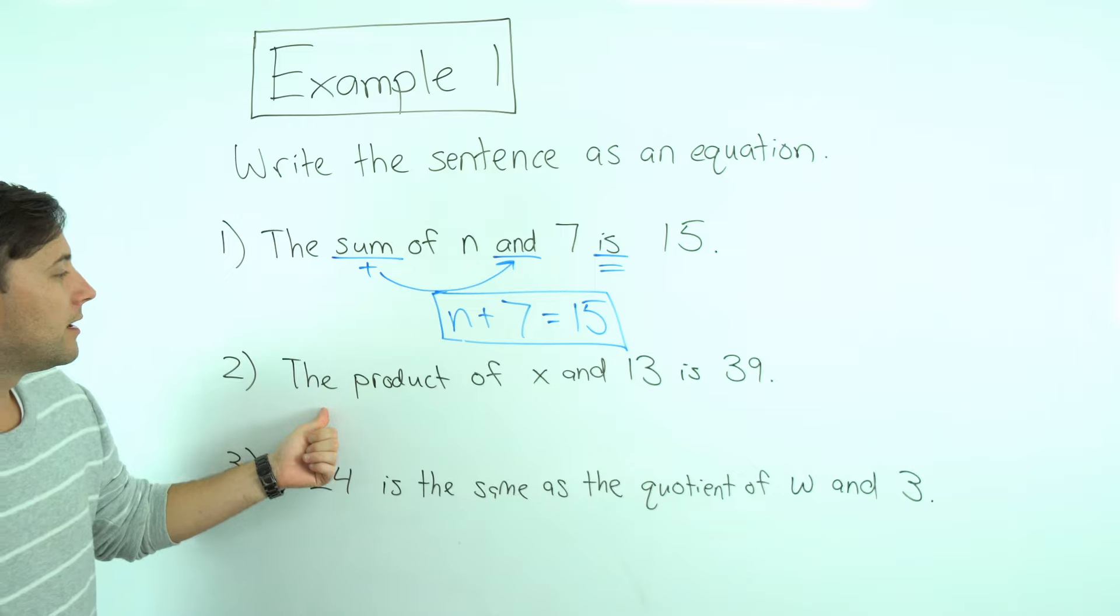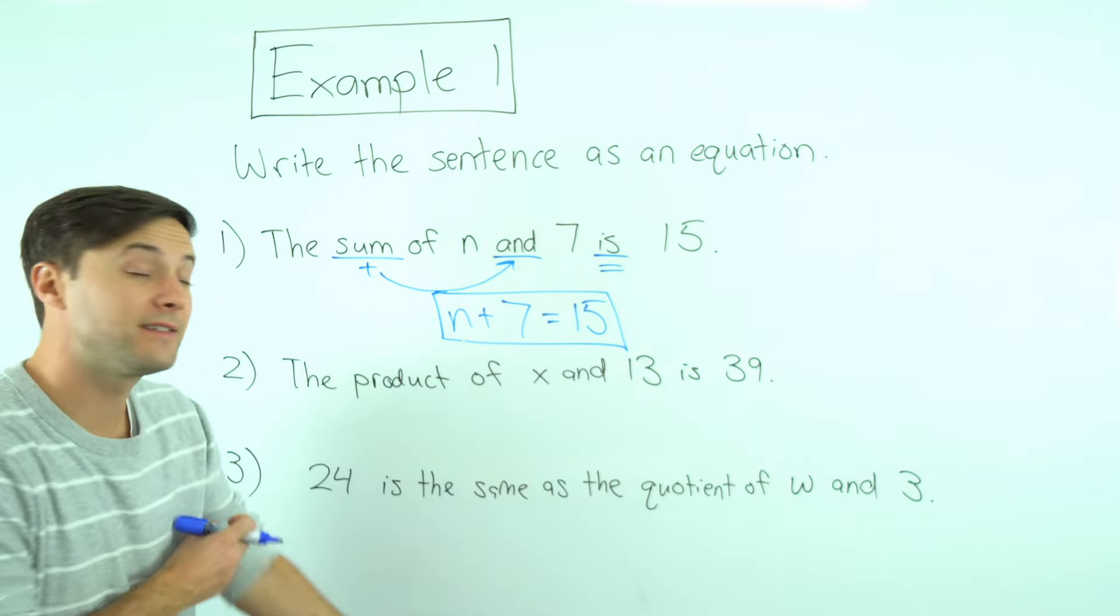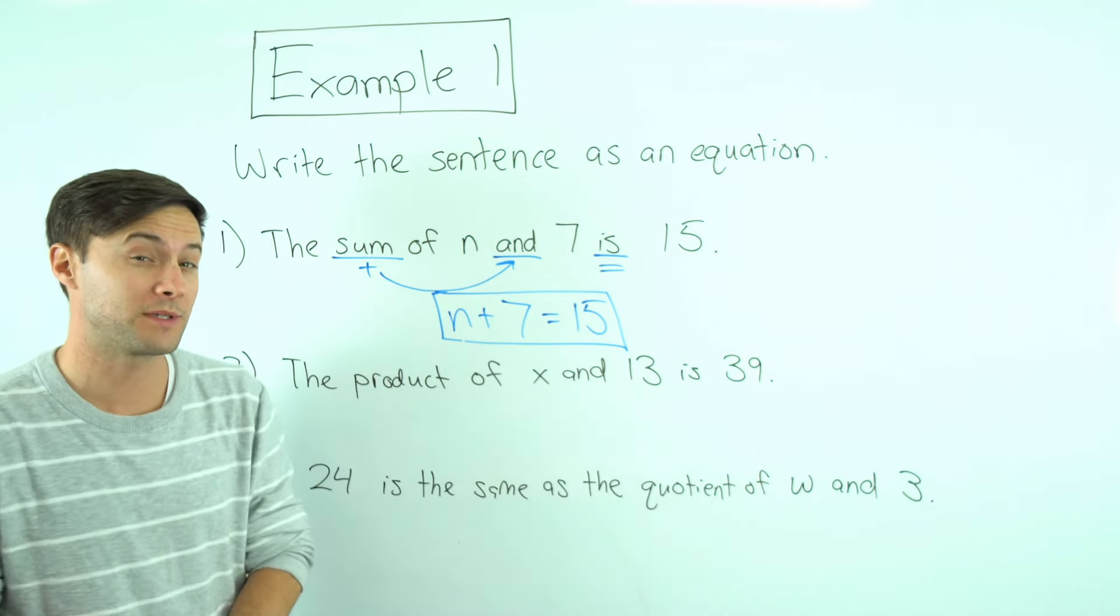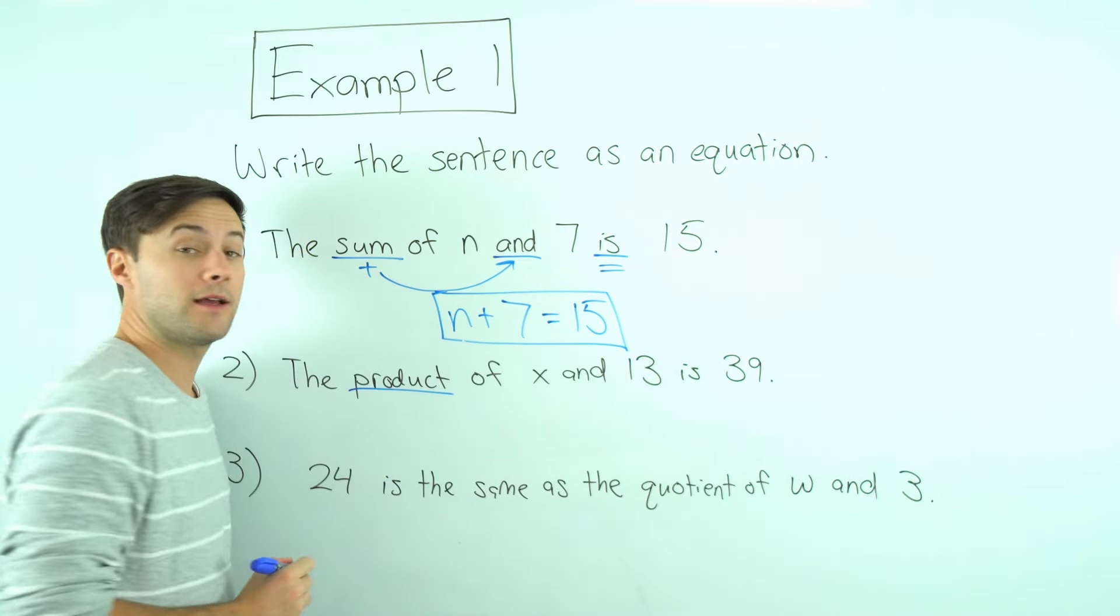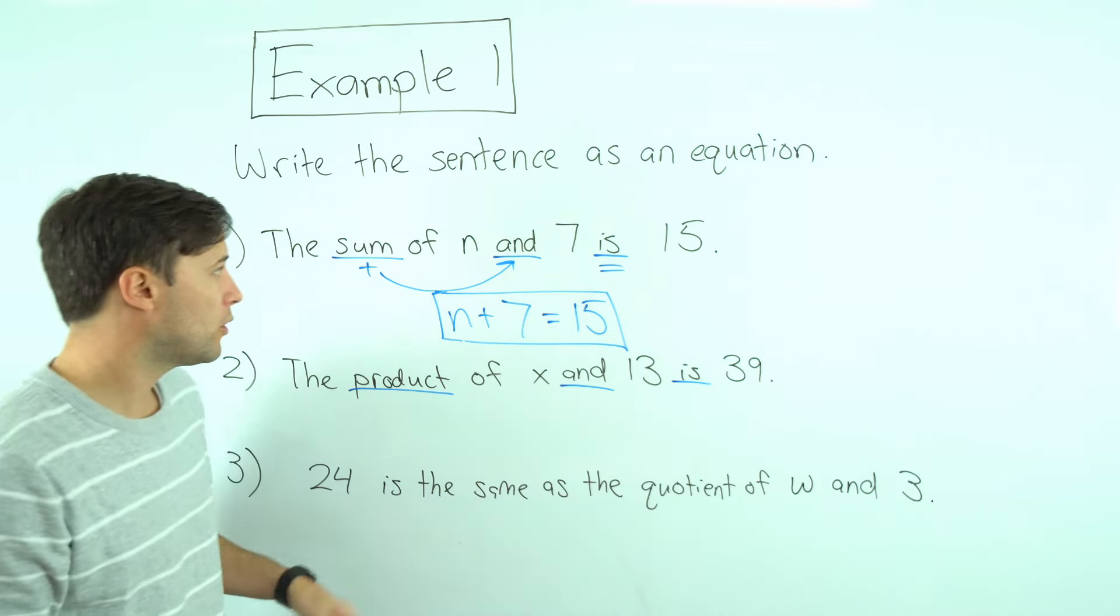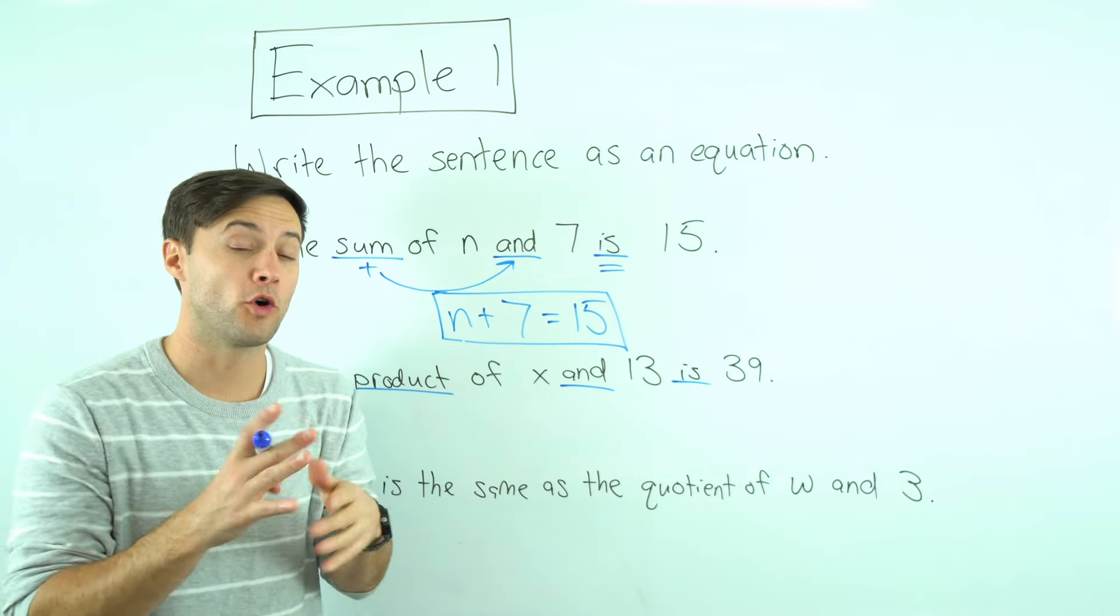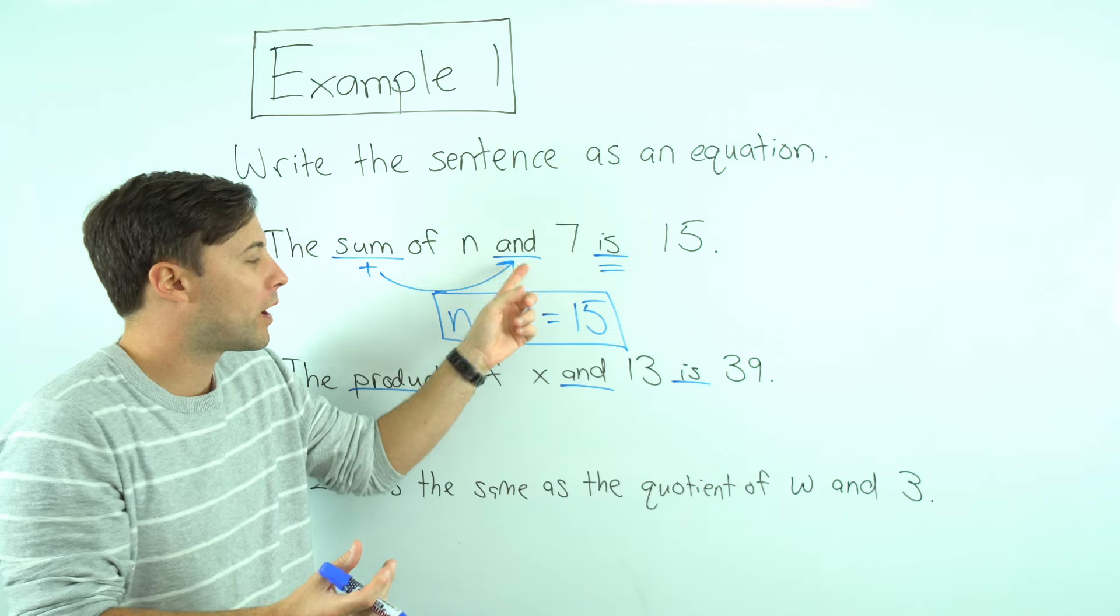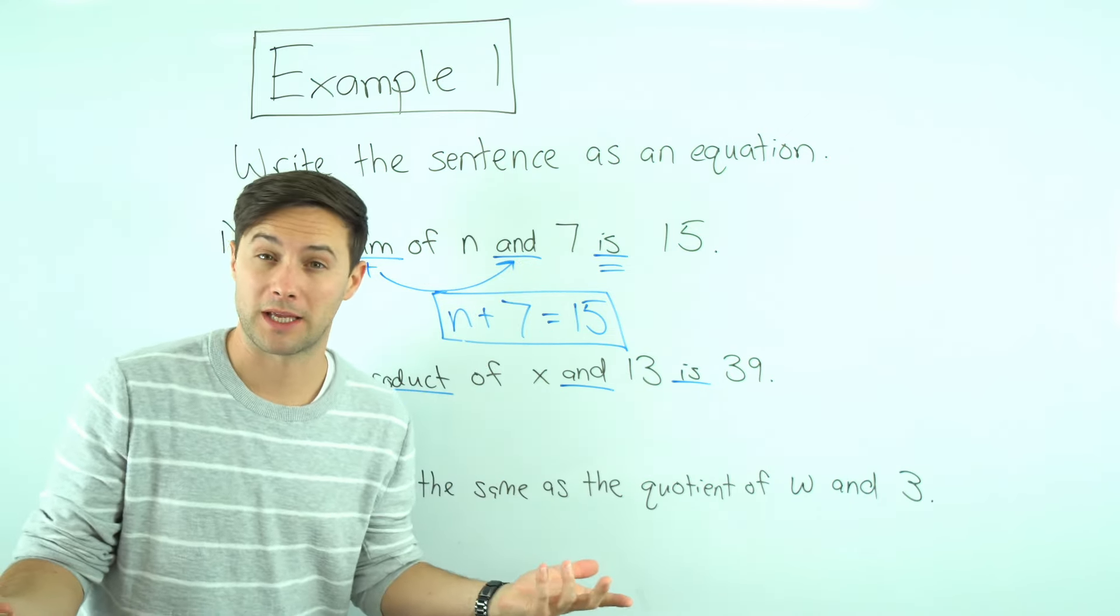Number two, the product of x and thirteen is thirty-nine. Same thing, let's look for those key words first. Hopefully something jumps out. Product, and, and is. Remember, sum, difference, product, quotient, those four words also come in pairs. You also want to find the and.